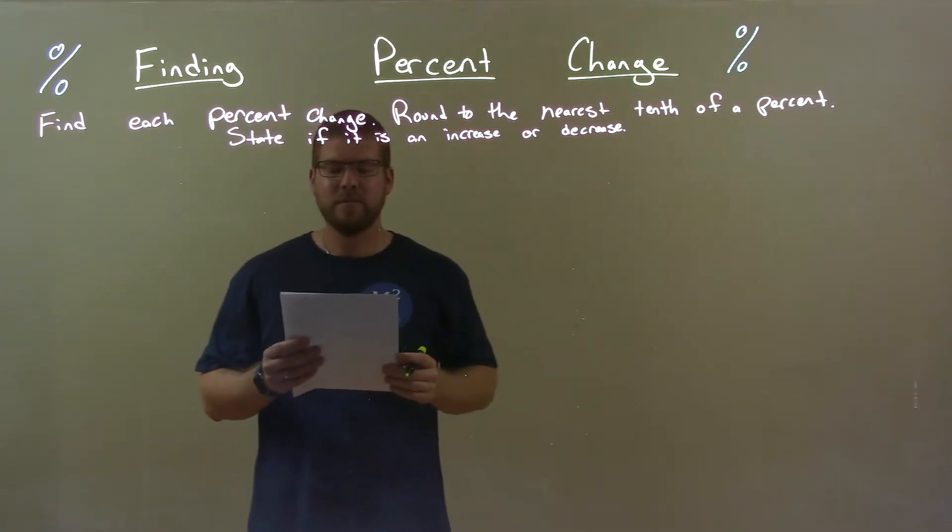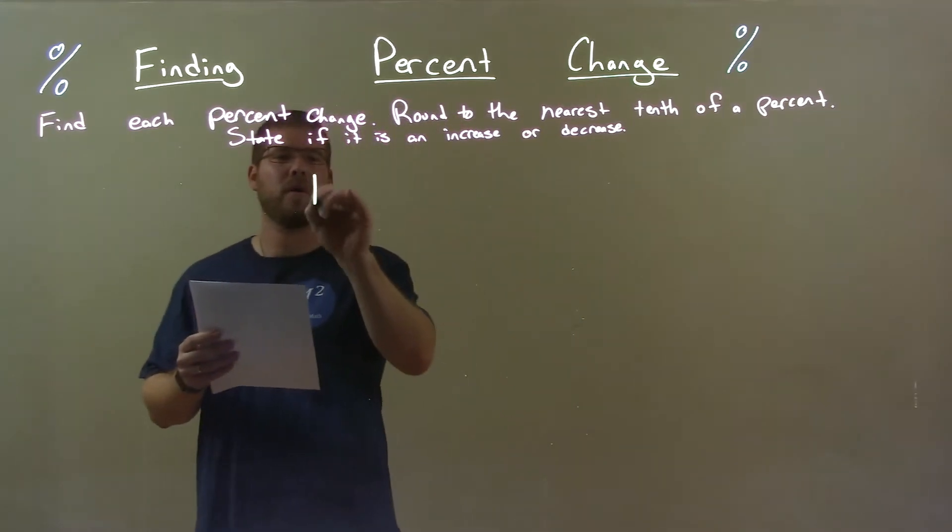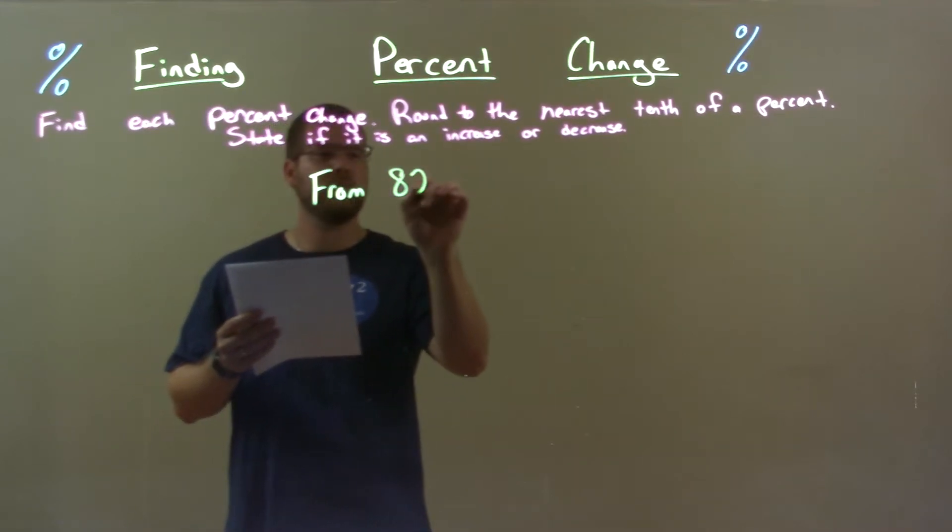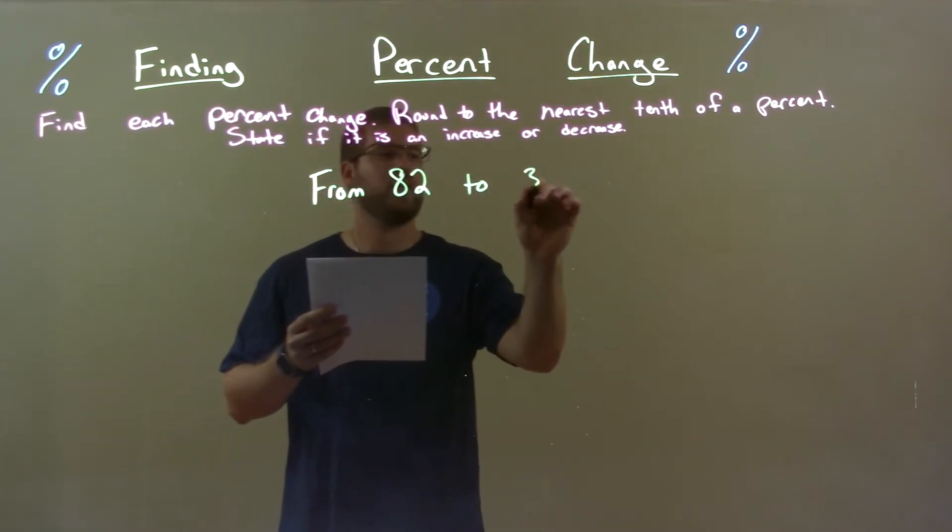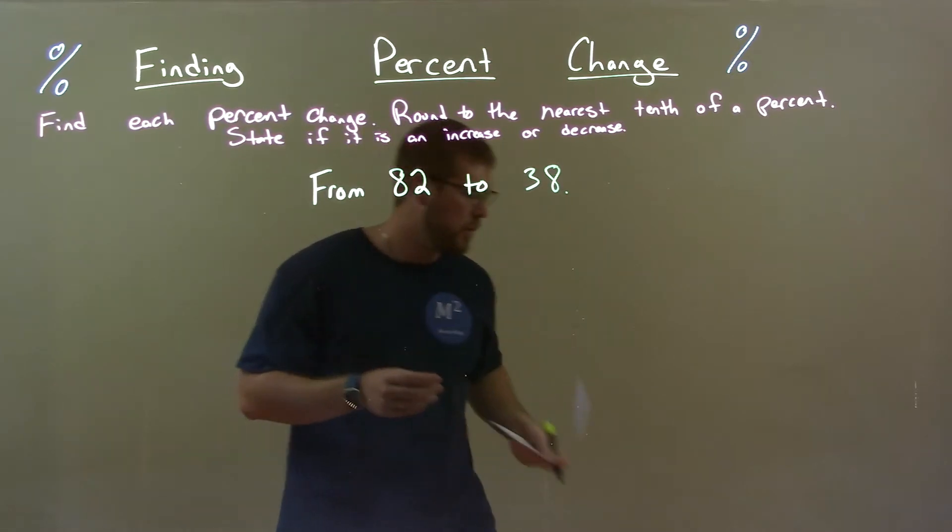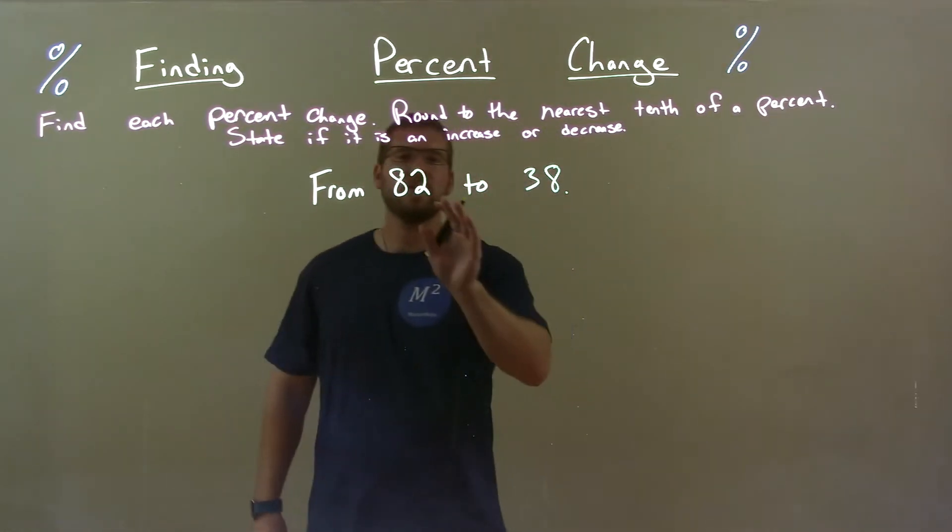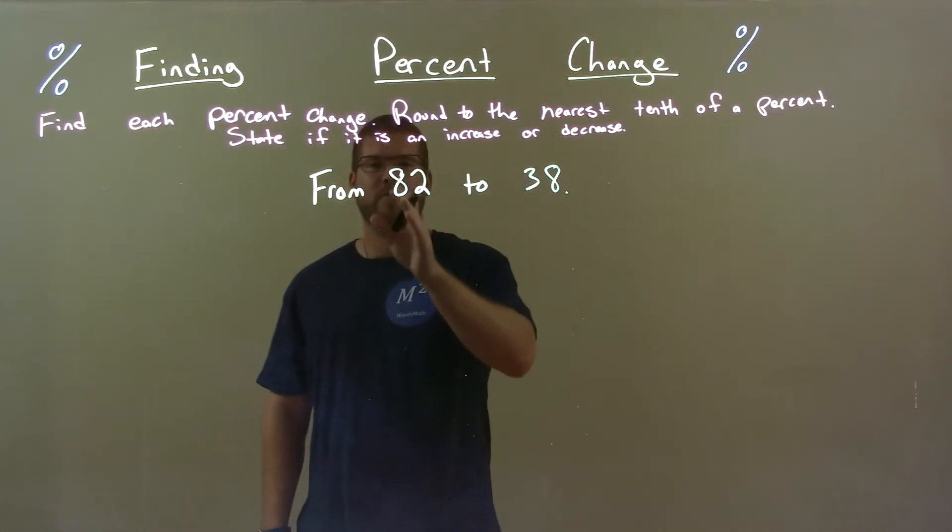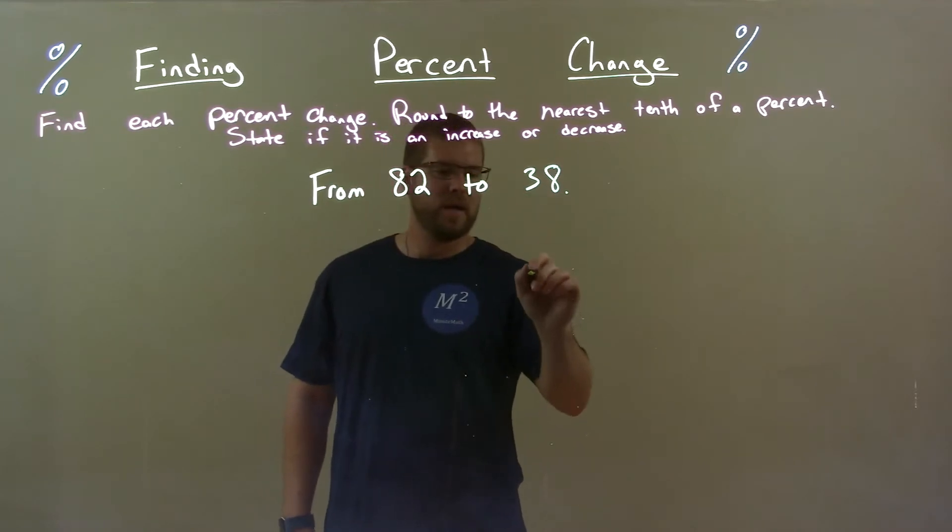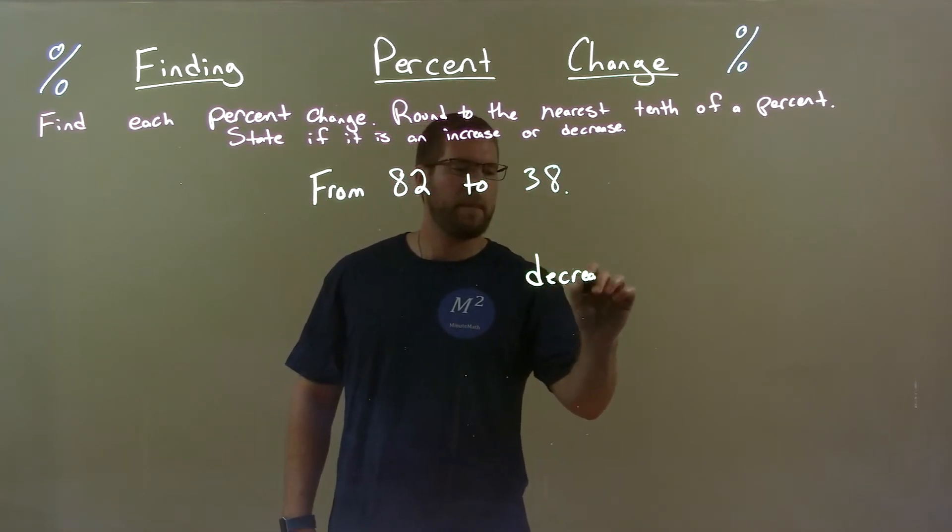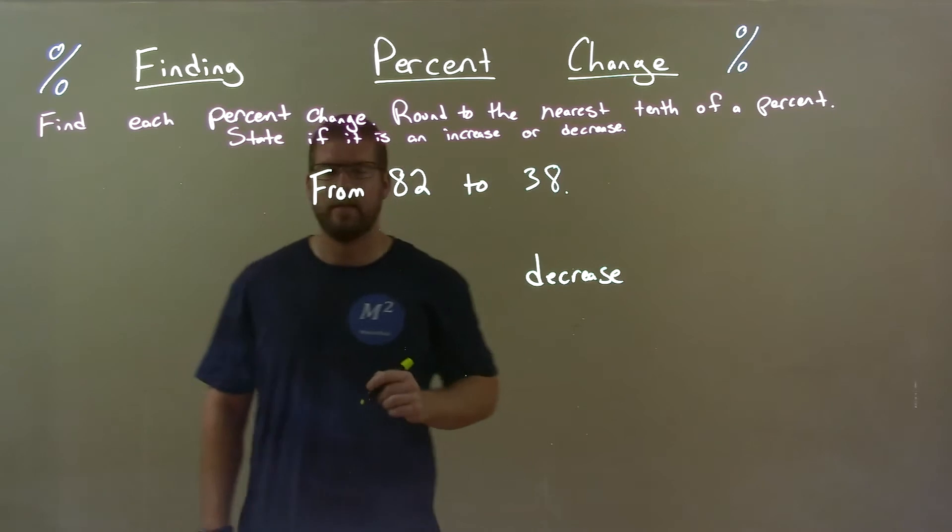So if I was given this problem from 82 to 38, first thing here is we can clearly see that this is a decrease. We went from 82 to 38 so we got a decrease right there.